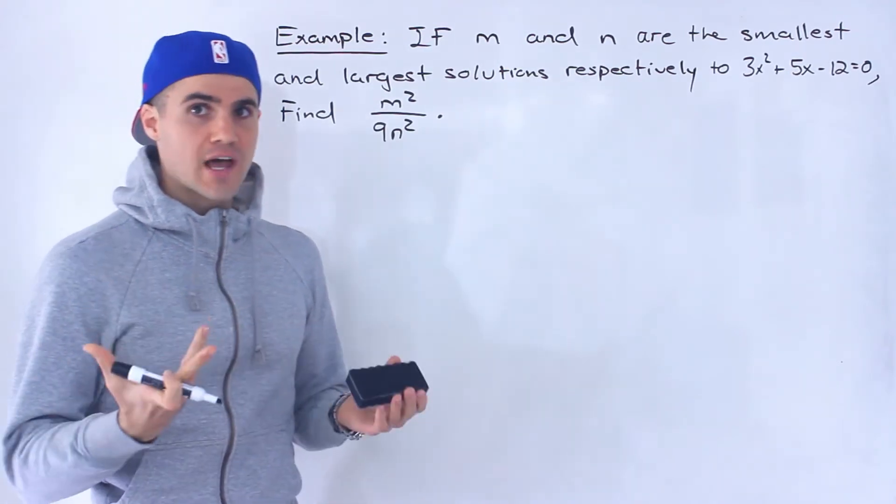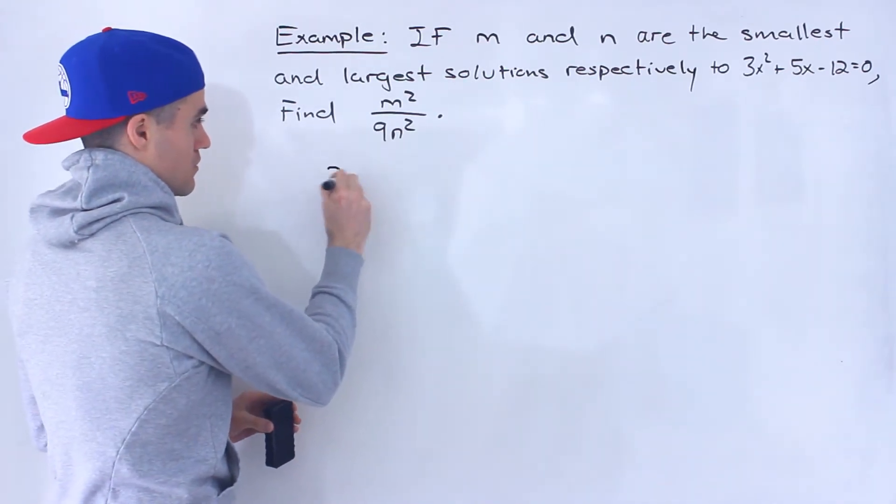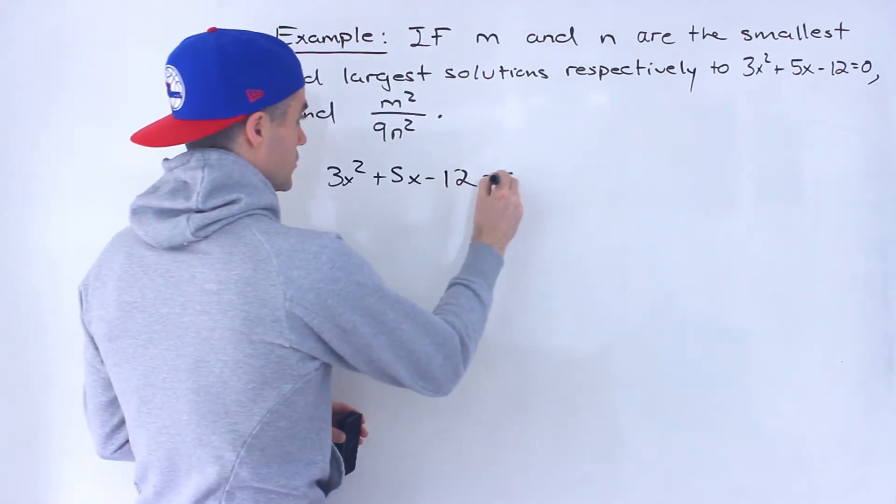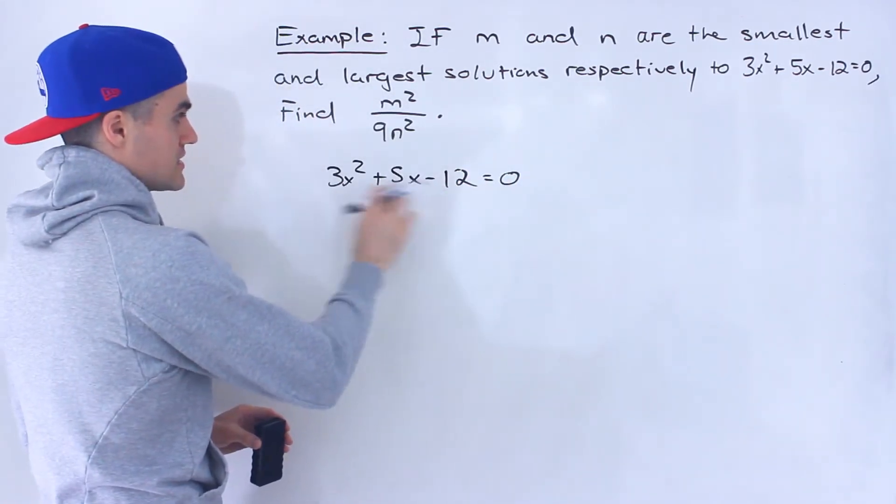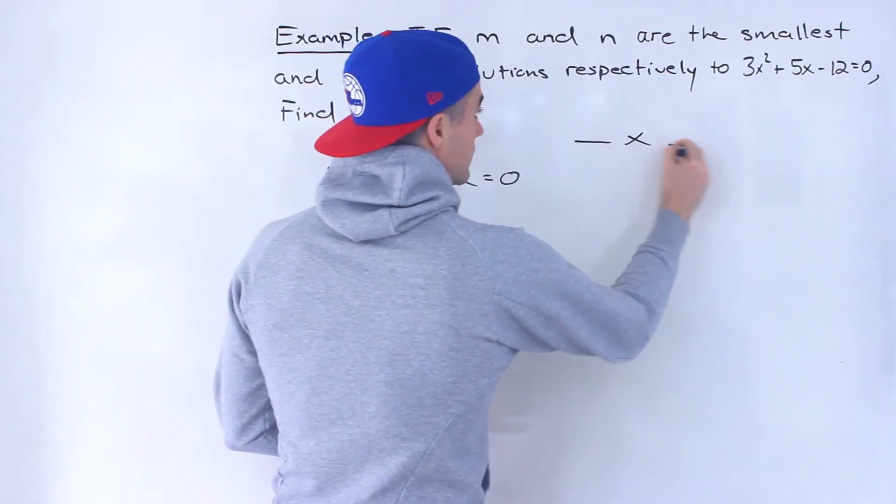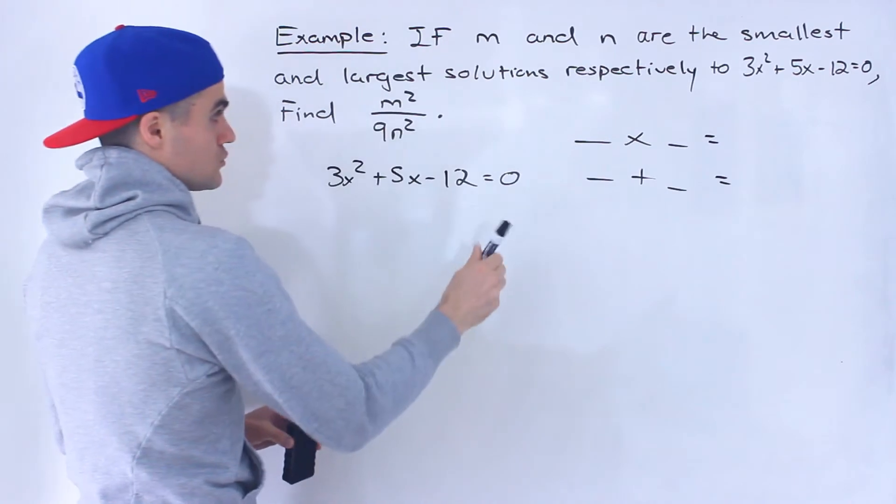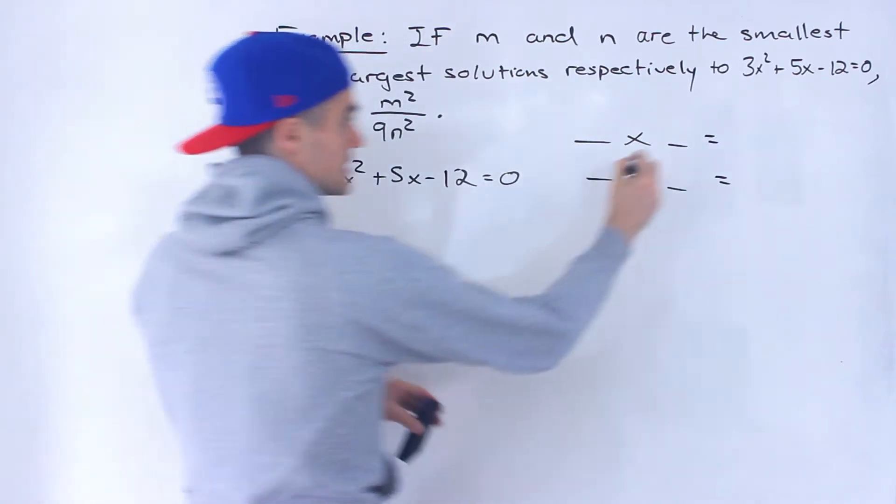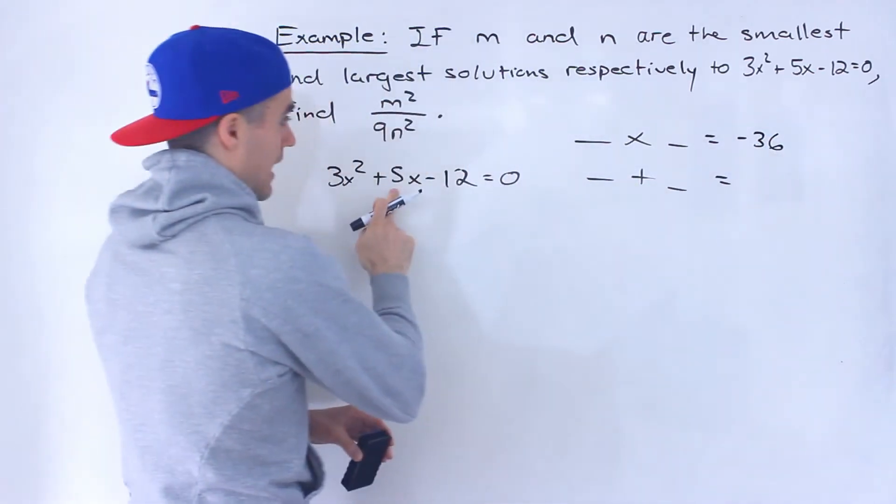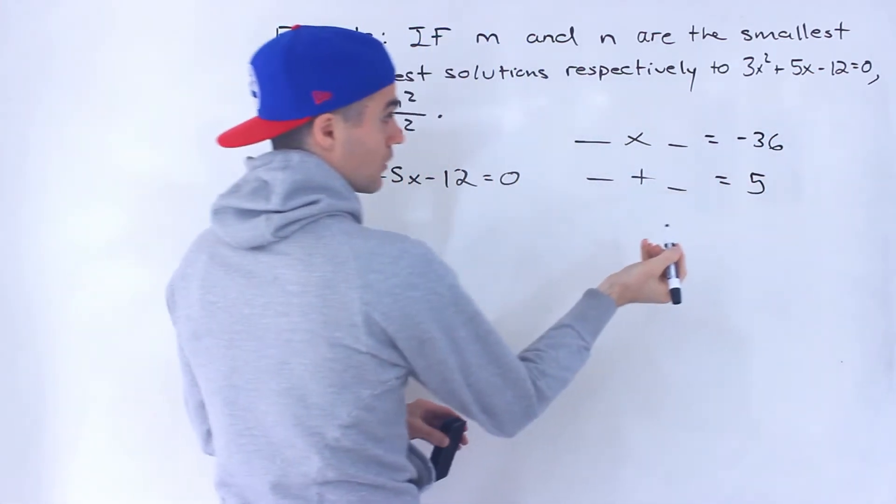So first step in this is we have to solve that quadratic equation. You can plug it into the quadratic formula, but this is going to factor smoothly. And the way to do that, let's do it by decomposition. We have to find two numbers that will multiply to a times c, so to negative 36, and then add up to that b value, positive 5. So what are the two numbers there?